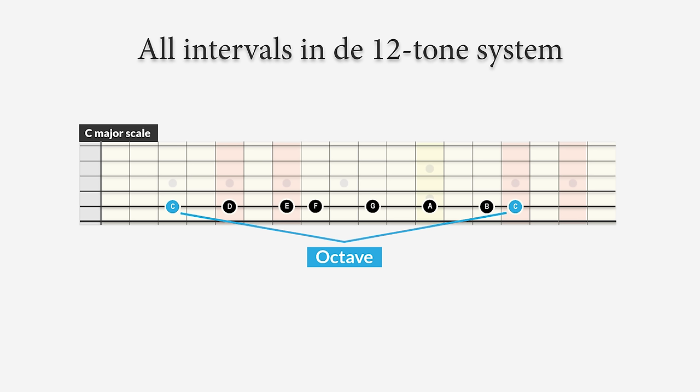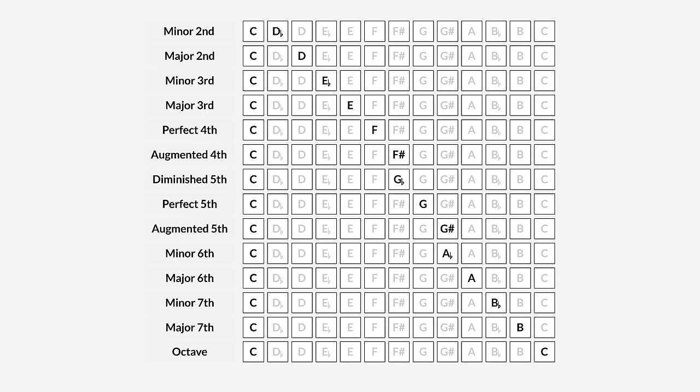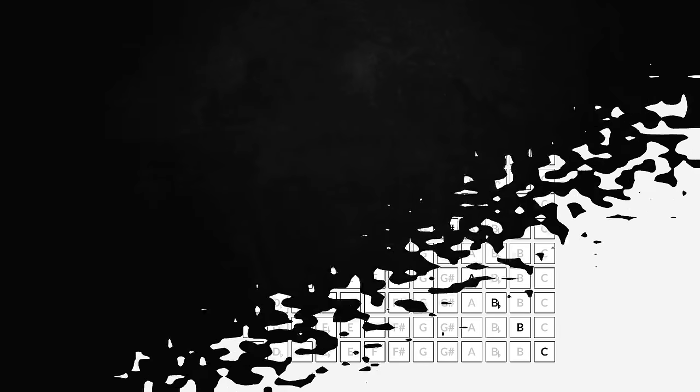The octave has no variations because it can only be from C to C and 12 half steps wide. How to put all this knowledge to practice we'll see later in the video. First we're going to see how to study and recognize interval shapes on the neck of the guitar.